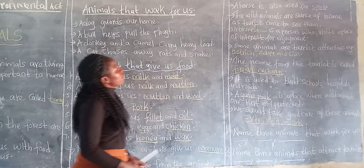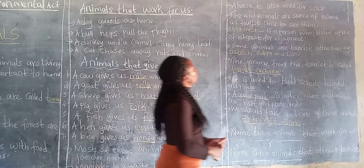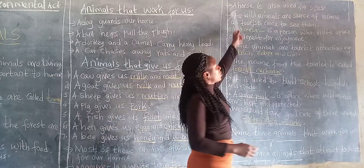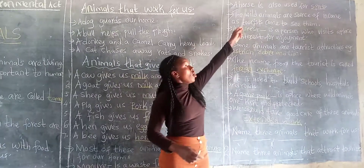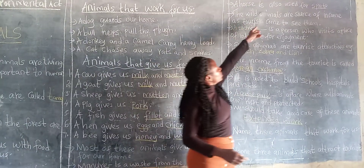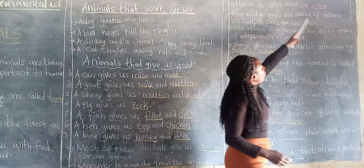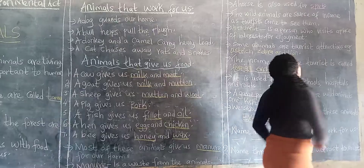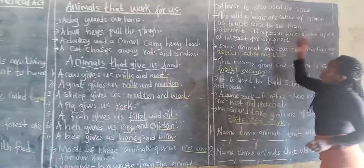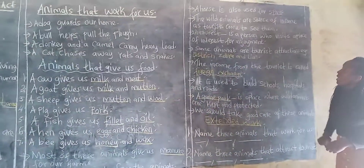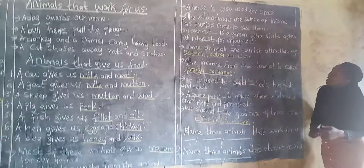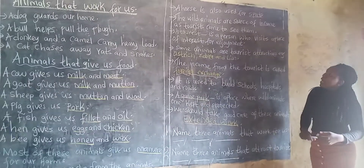Then we also have another animal — the horse. So a horse is also used for sports. Then we go to the wild animals.